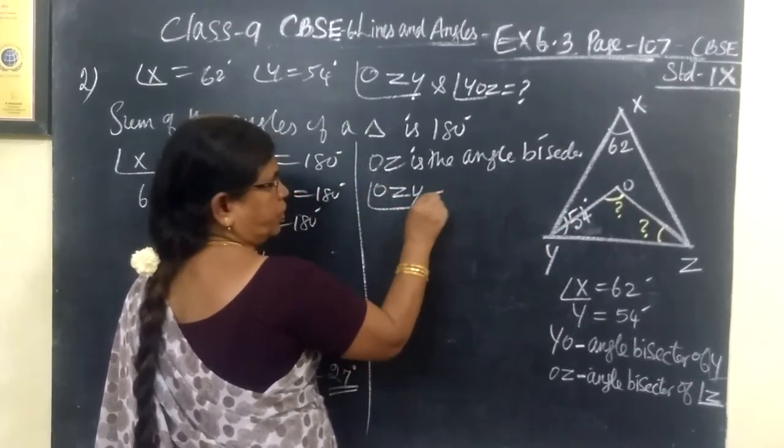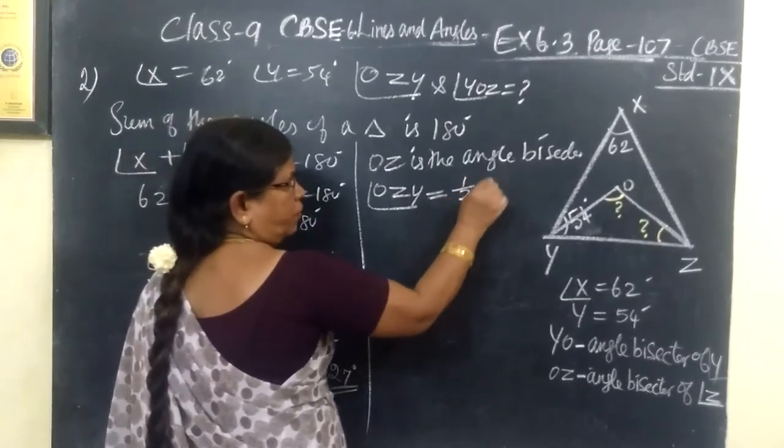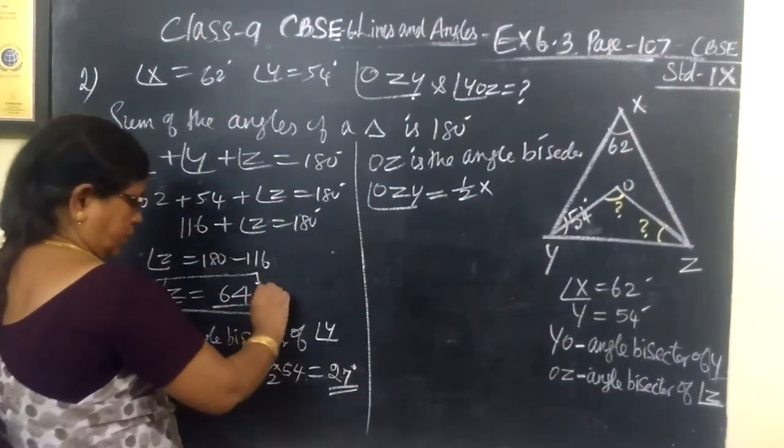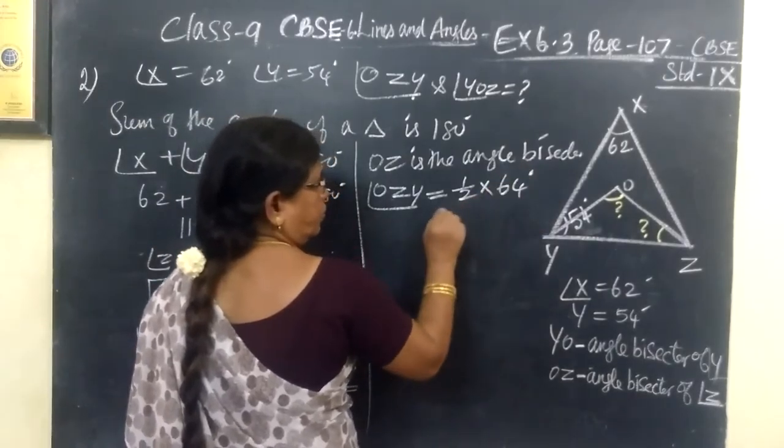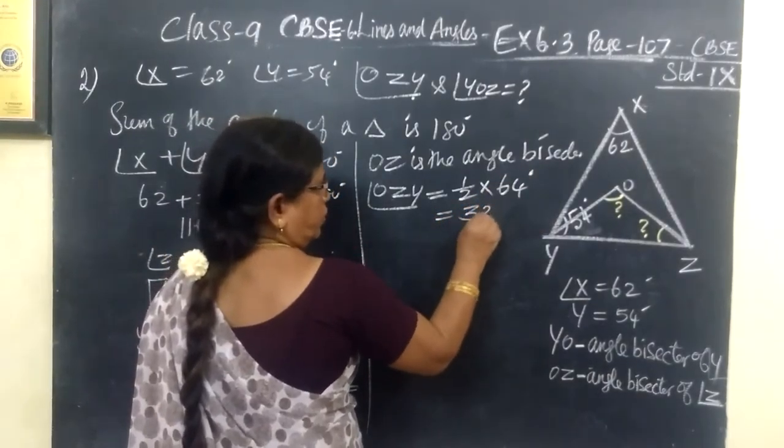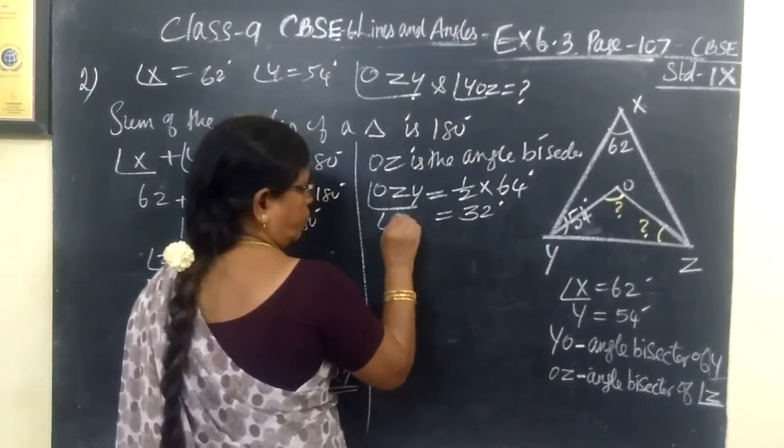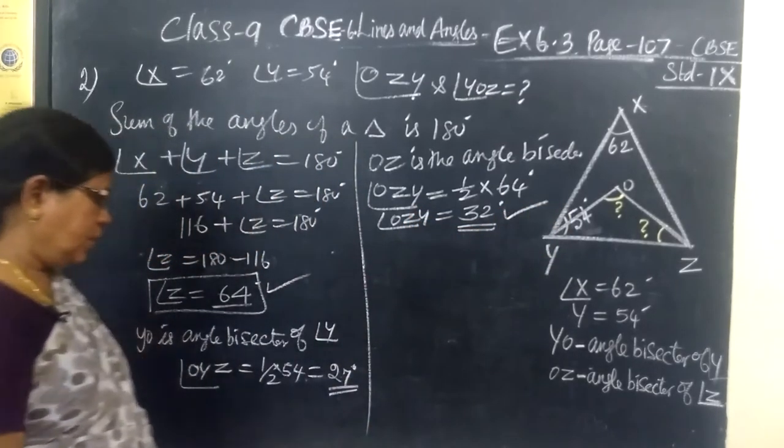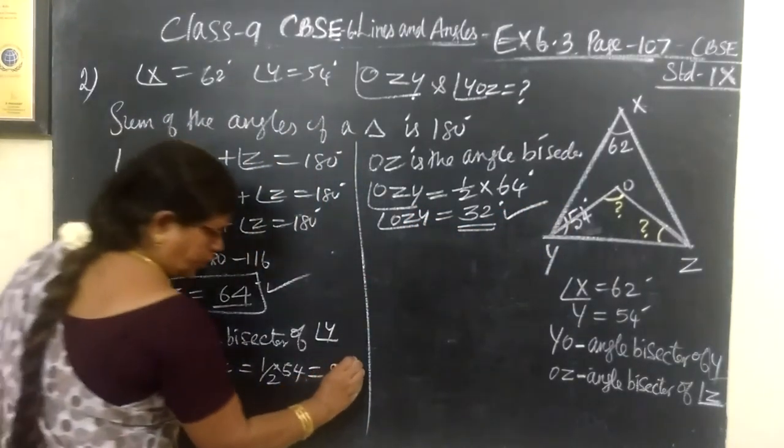Therefore, angle OZY equal to half of angle YZ. We have found it as 64. So, 64 divided by 2 equal to 32 degrees. So, OZY equal to 32 degrees. And this is 27 degrees.